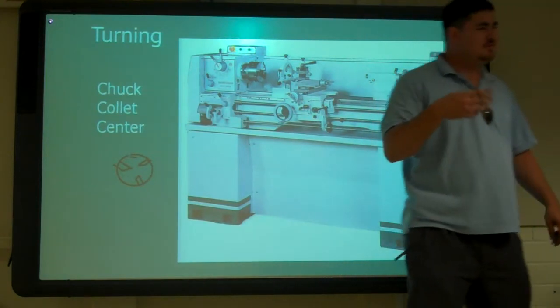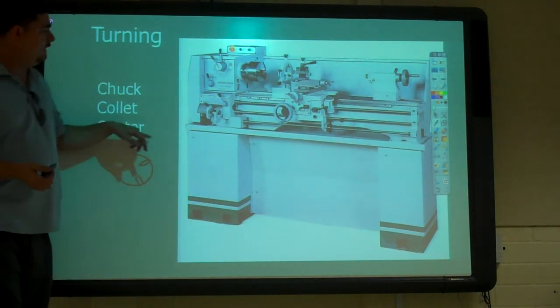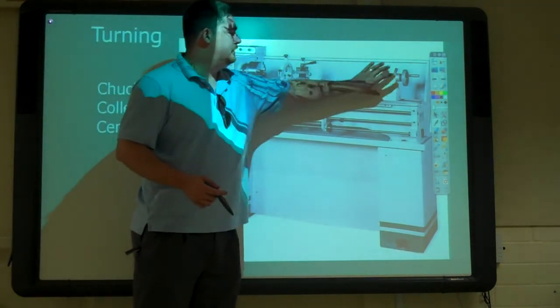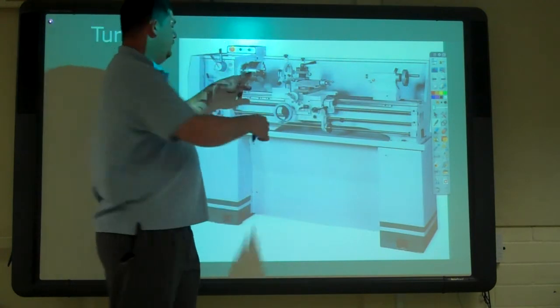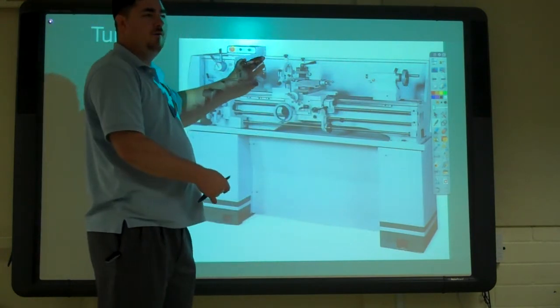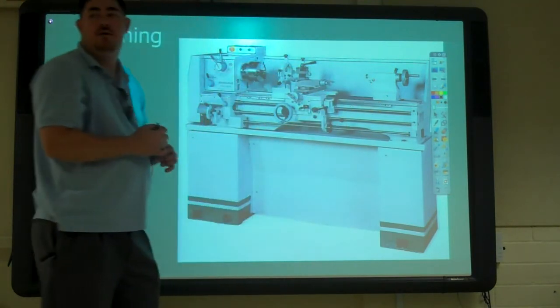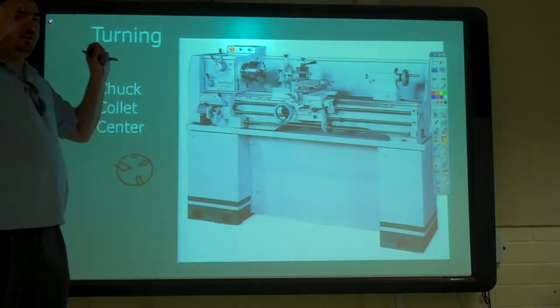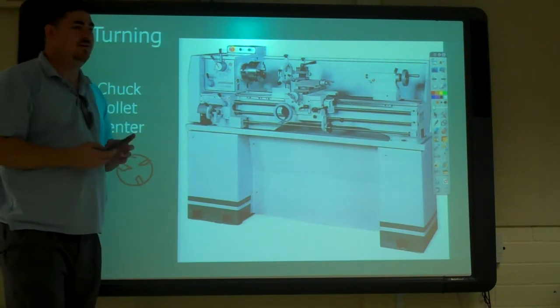Also, on mills they use collets for holding the tools. And then the center is over here. So, this is the tail stock. And then the tail stock goes to the center. So, if you have a long piece, you can support it by the chuck or the collet on one side, and the tail stock with the center on the other side. And those centers can either be just a solid piece or they can have bearings and move. So, that would be called a live center.